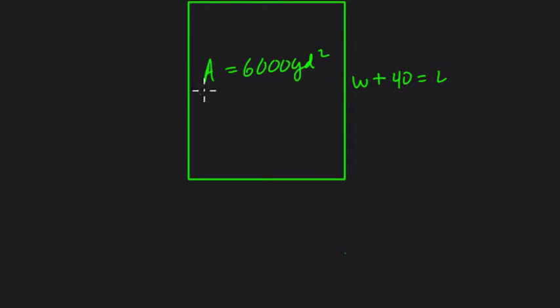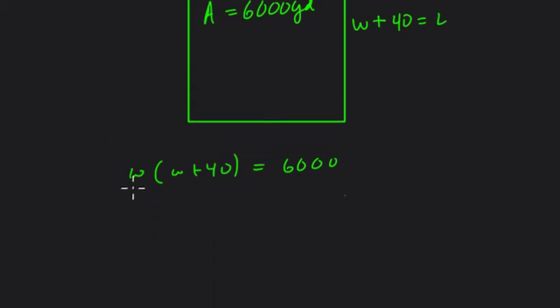And that means, since we only know area, that's a hint that we have to multiply W by W plus 40, because the product of these two sides must equal 6,000. So now we solve. W times W is W squared. W times 40 is 40W. Then we subtract 6,000 from both sides to get zero on one side.